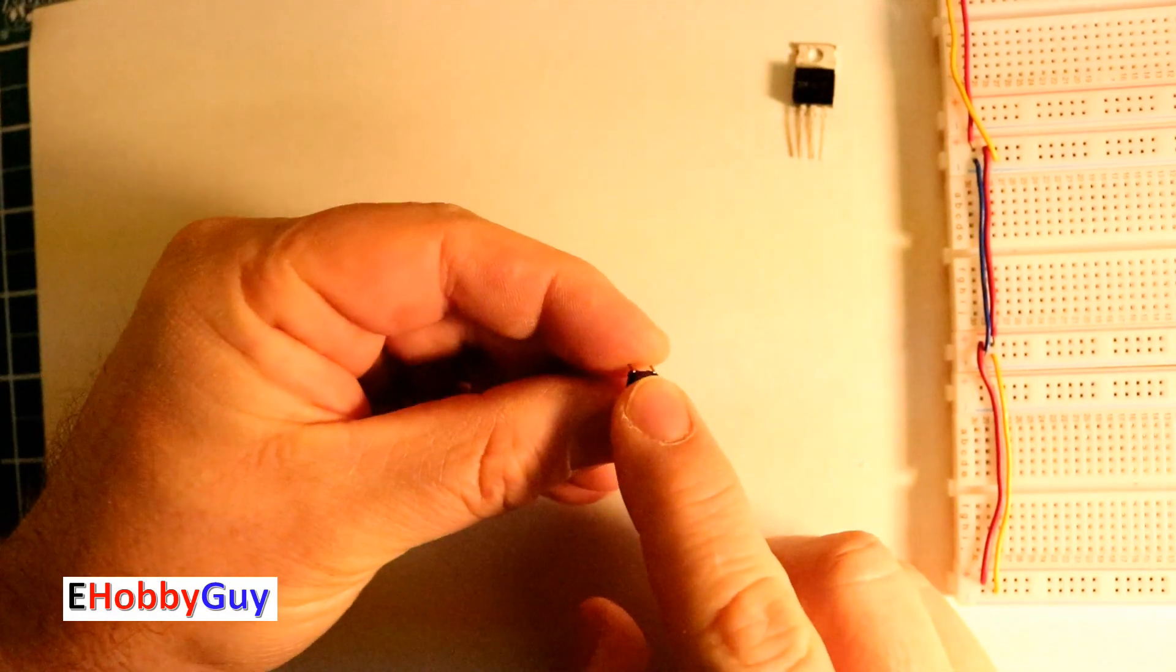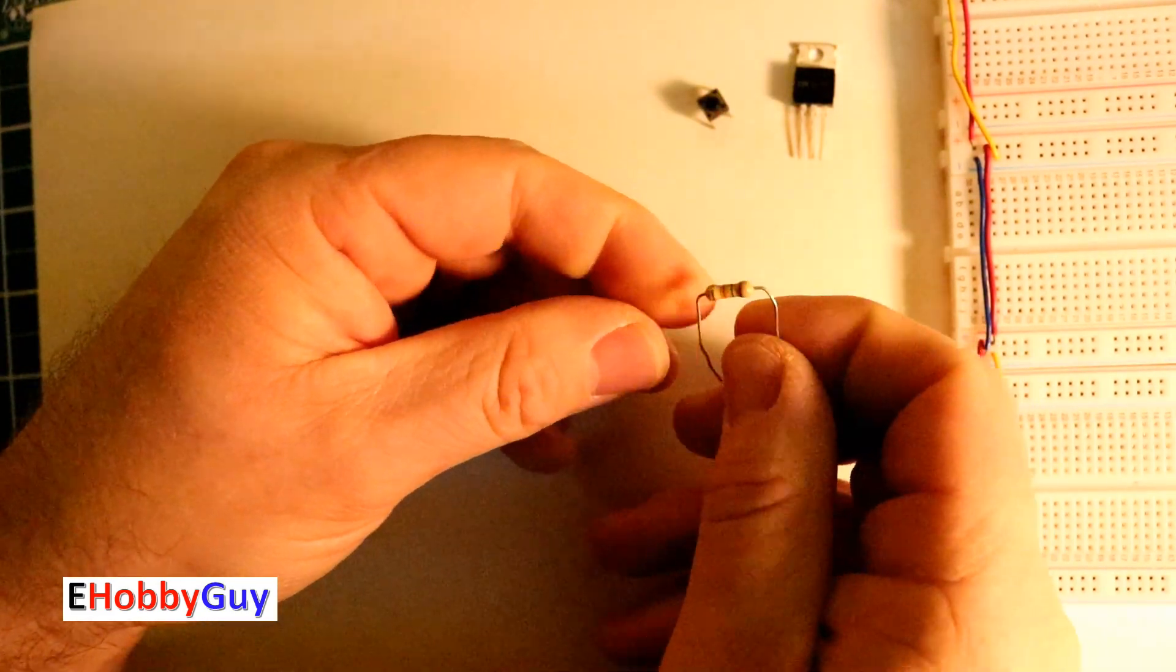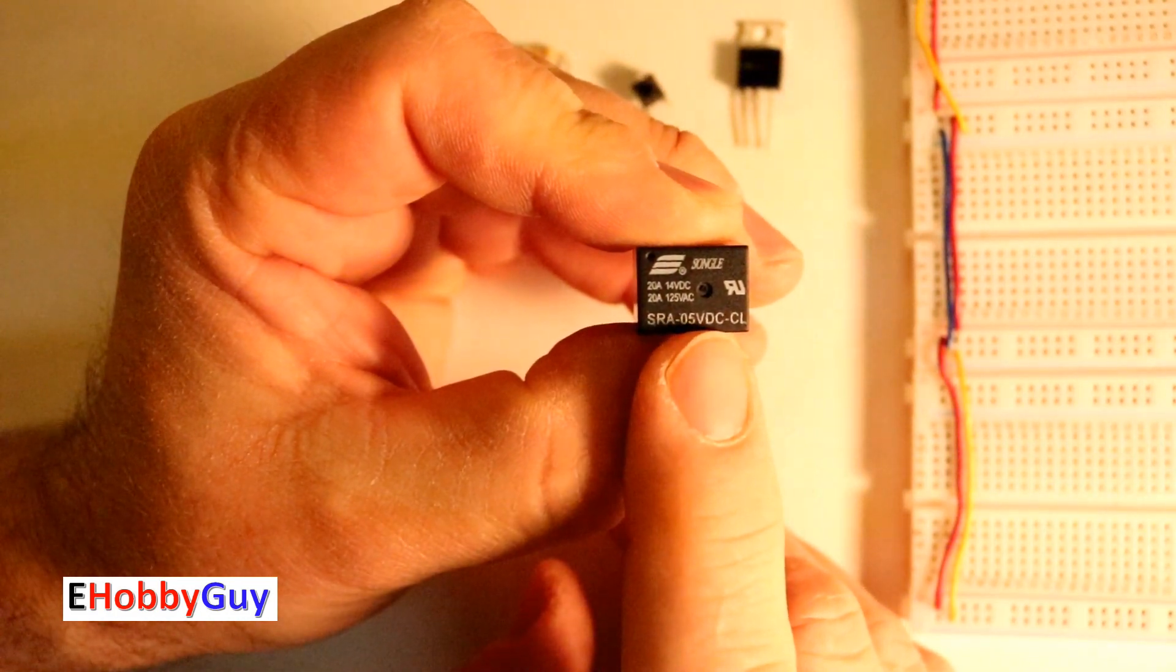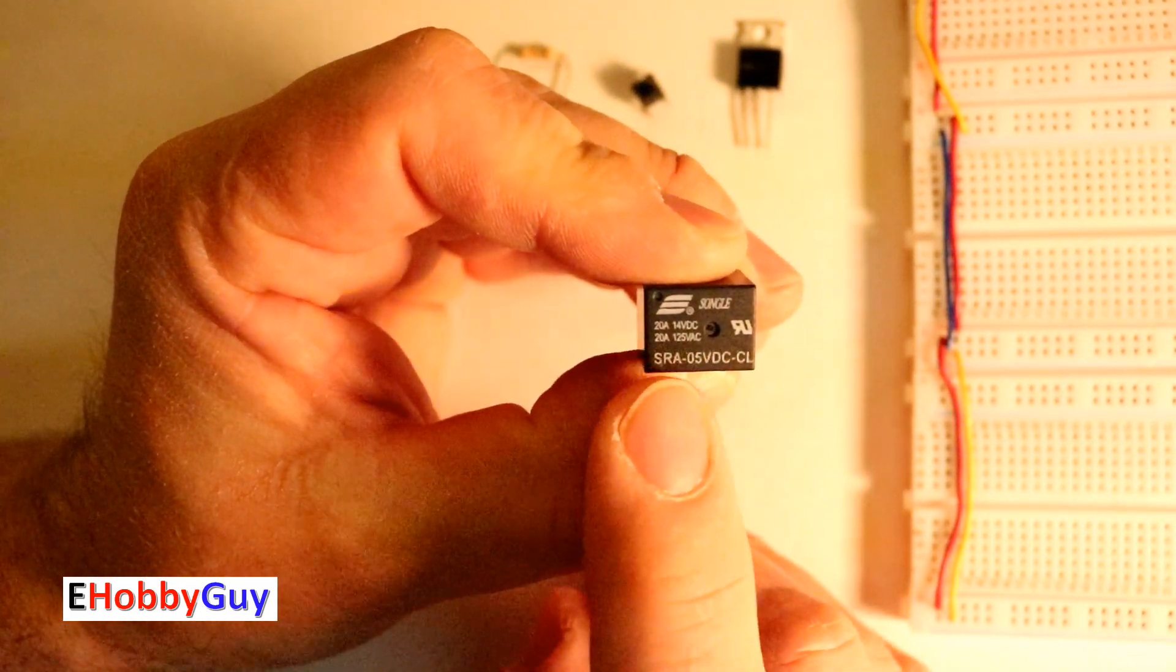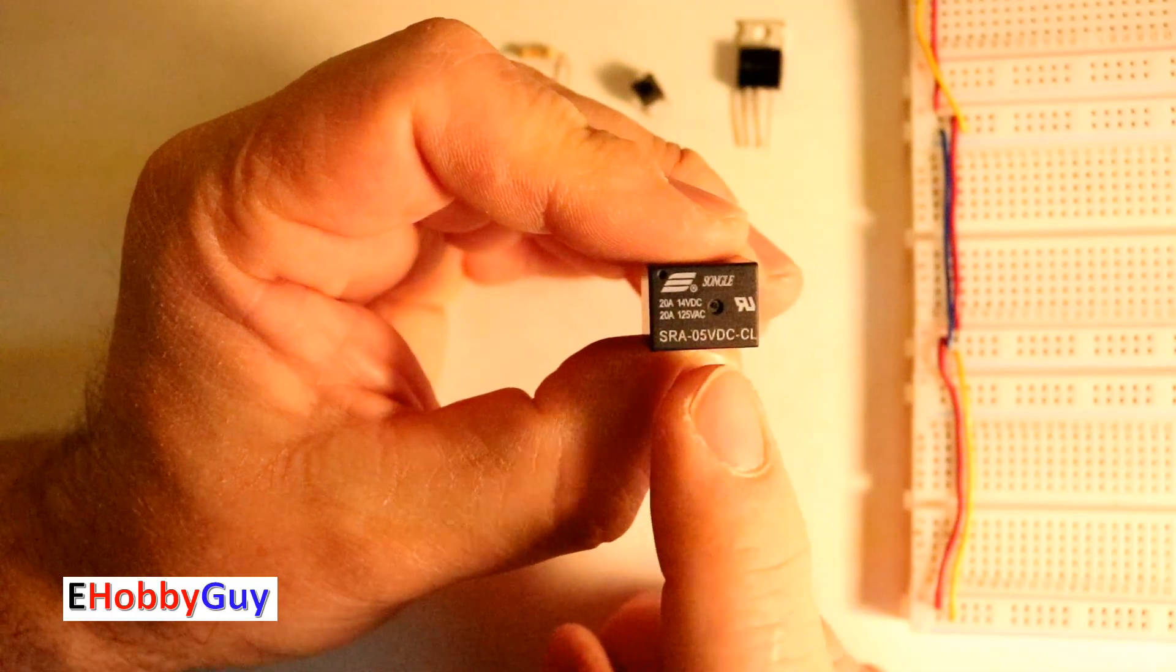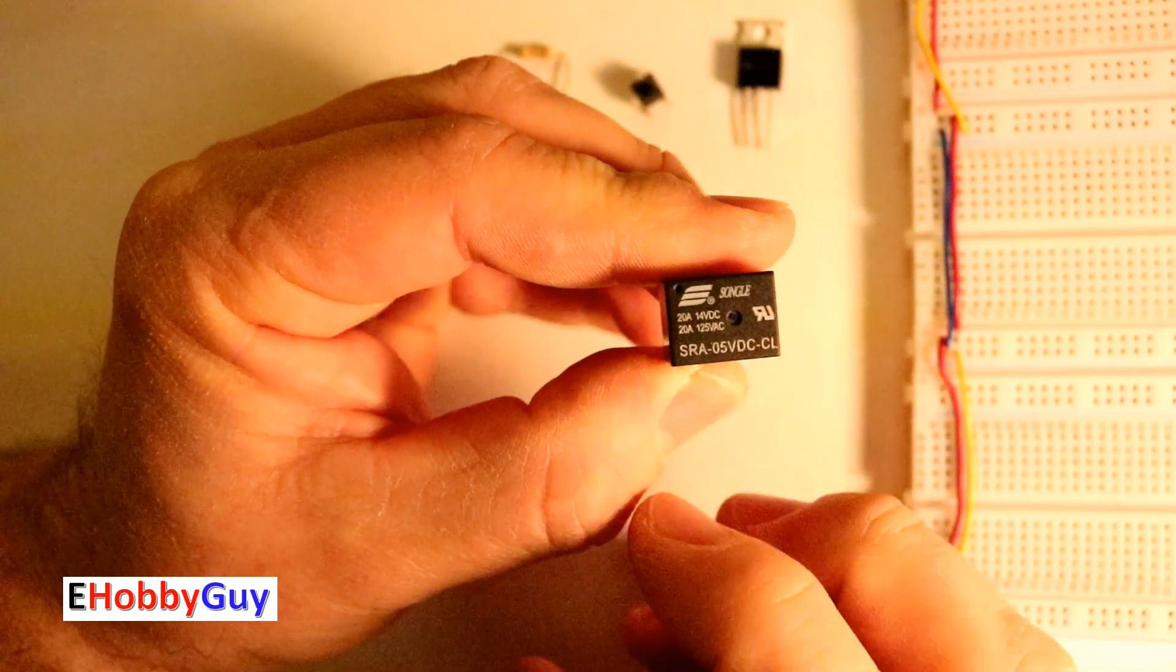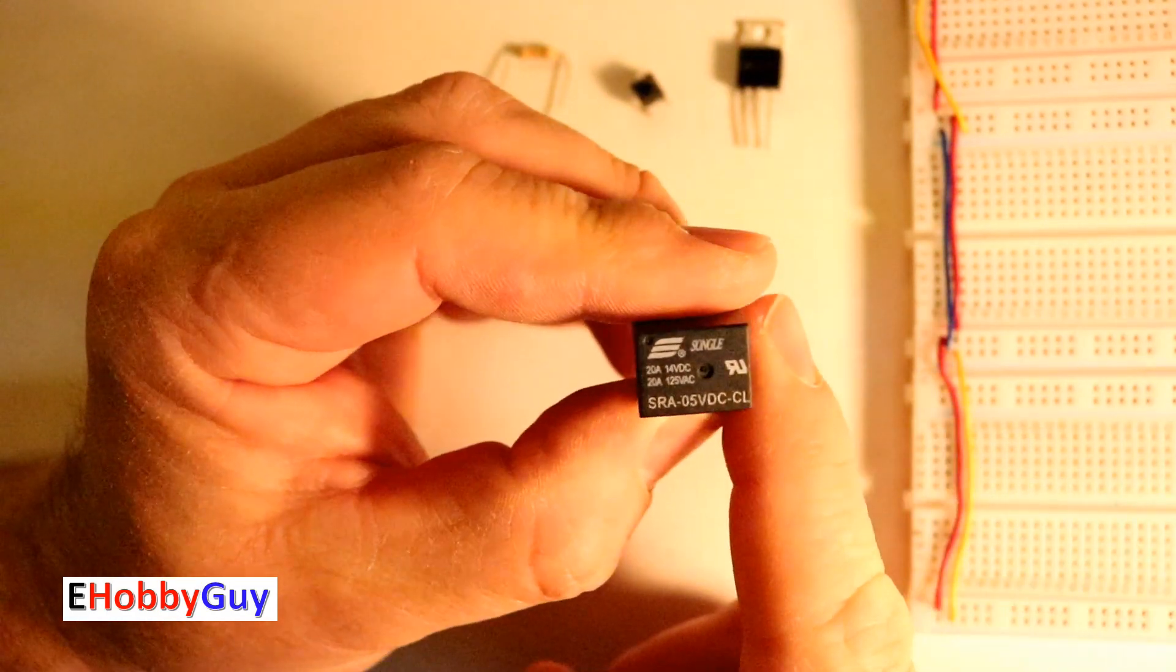So instead of that I'm just going to make it a little more simple and use this switch which does the exact same thing as the capacitive touch switch. Here is a 10 kilo ohm pull down resistor for the gate of the N channel MOSFET. And finally the relay. So here you can see the relay. It's an SRA-05VDC-CL. You can see the contact rating right here. It's 20 amps at 125 volts AC. It's also 20 amps at 14 volts DC. So this is a 5 volt relay with one form C contact which has a common normally open and a normally closed. Of course I do have a very comprehensive video explaining in detail all relays. Quite comprehensive like I said I would highly recommend taking a look. Again I'll leave a link in the description for that.